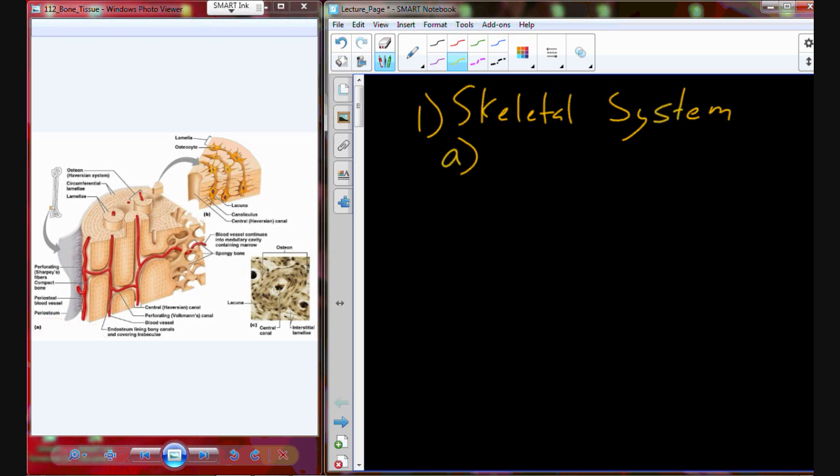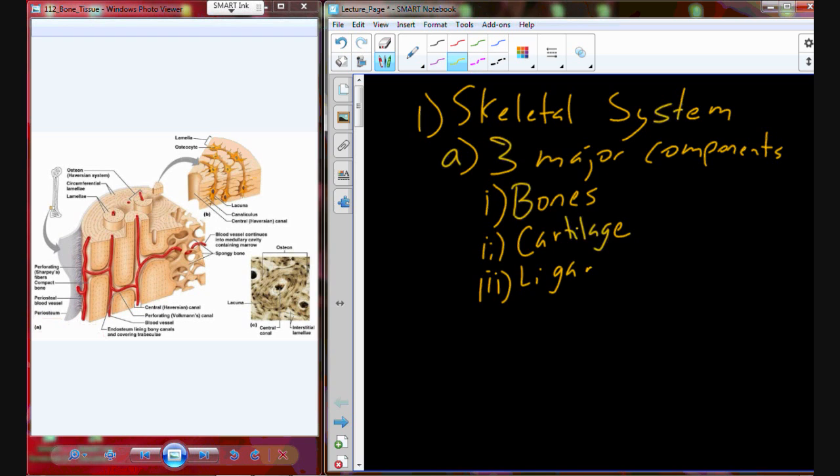The skeletal system has three major components, including the bones themselves. Each individual bone, 206 in the human body, would be classified as an organ of the organ system known as the skeletal system. We also have cartilage, which is more of a tissue, and then we have ligaments which connect bone to bone.